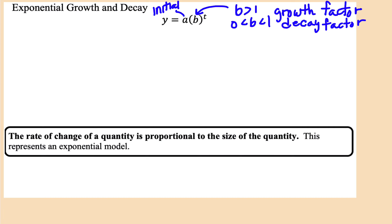The exponential growth and decay model is y equals a times b to the t power. Here, a is the initial amount we have, and b is called the growth factor if b is greater than 1, and the decay factor if b is between 0 and 1.